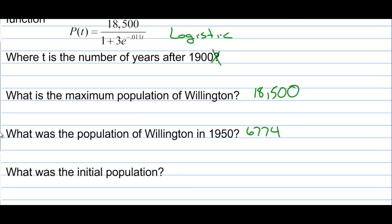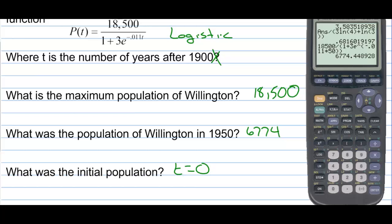What was the initial population — in other words, when T = 0, meaning the population in 1900? When you plug in T = 0, e to the 0 equals 1, so the denominator becomes 1 + 3(1) = 4. Therefore 18,500 divided by 4 equals 4,625.